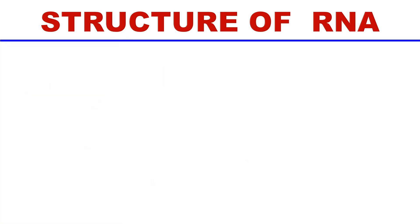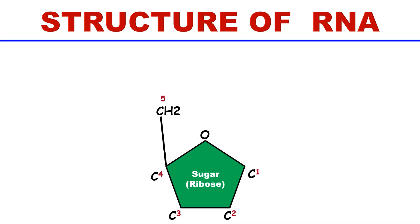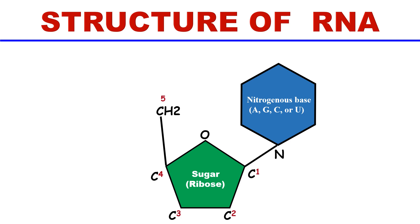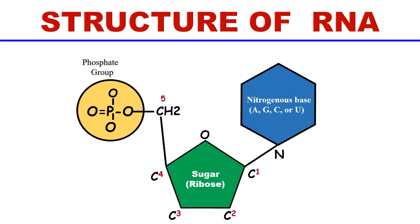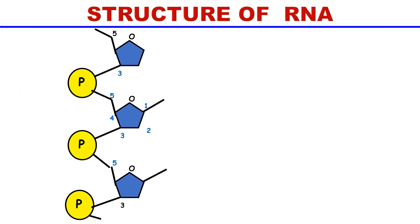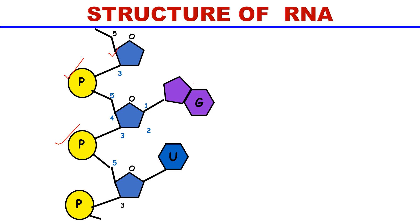In this slide you can see how the structure of RNA is formed. The ribose sugar has a nitrogenous base attached to its first carbon, while the phosphate group is attached at the fifth position. This combination of ribose sugar, nitrogenous base, and phosphate group forms a nucleotide, which is the basic unit of RNA. The backbone of RNA is formed by ribose sugar and phosphate groups, with nitrogenous bases such as guanine and uracil attached. Mostly, RNA molecules are single-stranded.